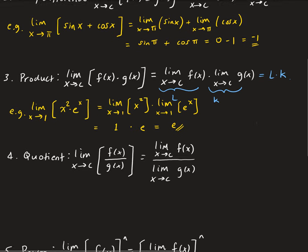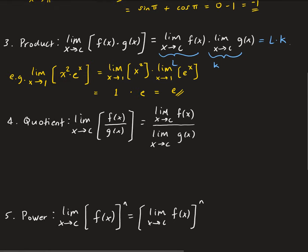The fourth property is the quotient rule for limits. Much like the product rule, we can split it up — the only difference is we're using a quotient instead of a product. We have the limit of F over G as X approaches C, which separates into the limit of F as X approaches C divided by the limit of G as X approaches C. This gives us L over K, provided that K is not equal to zero.